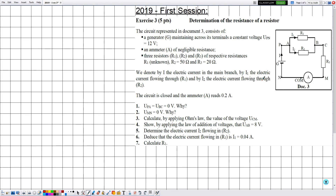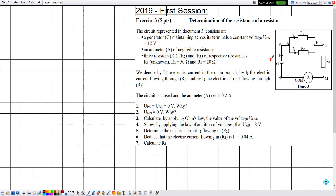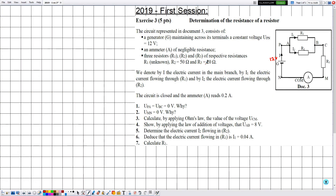The circuit represented in document 3 consists of a generator G maintaining across its terminals a constant voltage UPN equal to 12 volts. The trick in solving such type of exercises is to write the given voltage on the electric circuit itself. We also have an ammeter A of negligible resistance, and 3 resistors R1, R2, and R3 of respective resistances: R1 is unknown, R2 is equal to 50 ohms, and R3 is equal to 20 ohms.